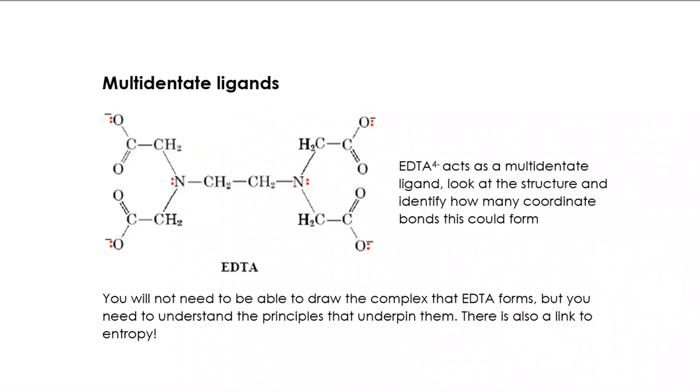We can also look at multidentate ligands. Have a look at this and think about how many coordinate bonds you think this substance EDTA could form. What I'm going to do is highlight the lone pairs, and they're already in red. This EDTA will fold around the central ion forming six coordinate bonds. It's still octahedral, still bond angles of 90. The good news is you will not need to be able to draw it, but you do need to be able to look at a diagram of it and recognize where the lone pairs are. Six pairs of electrons can form six bonds.